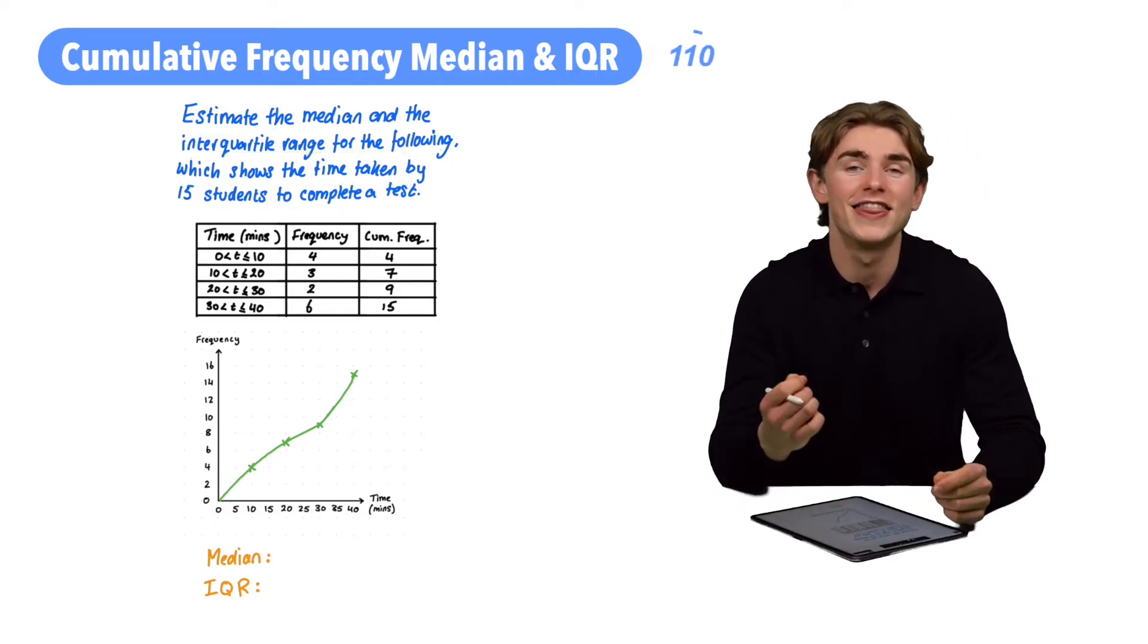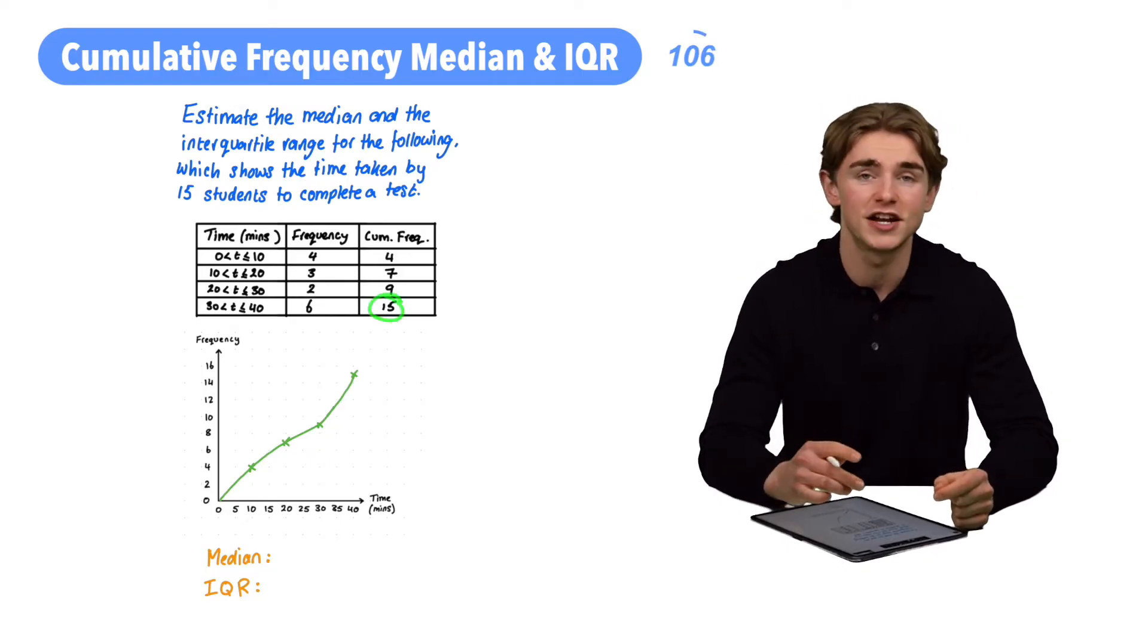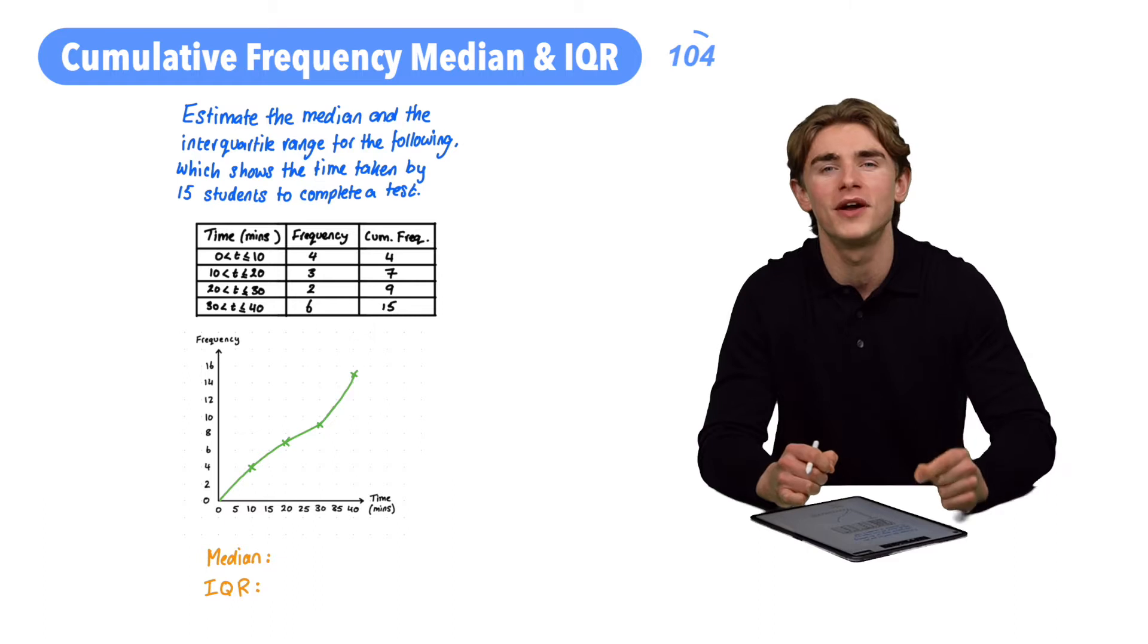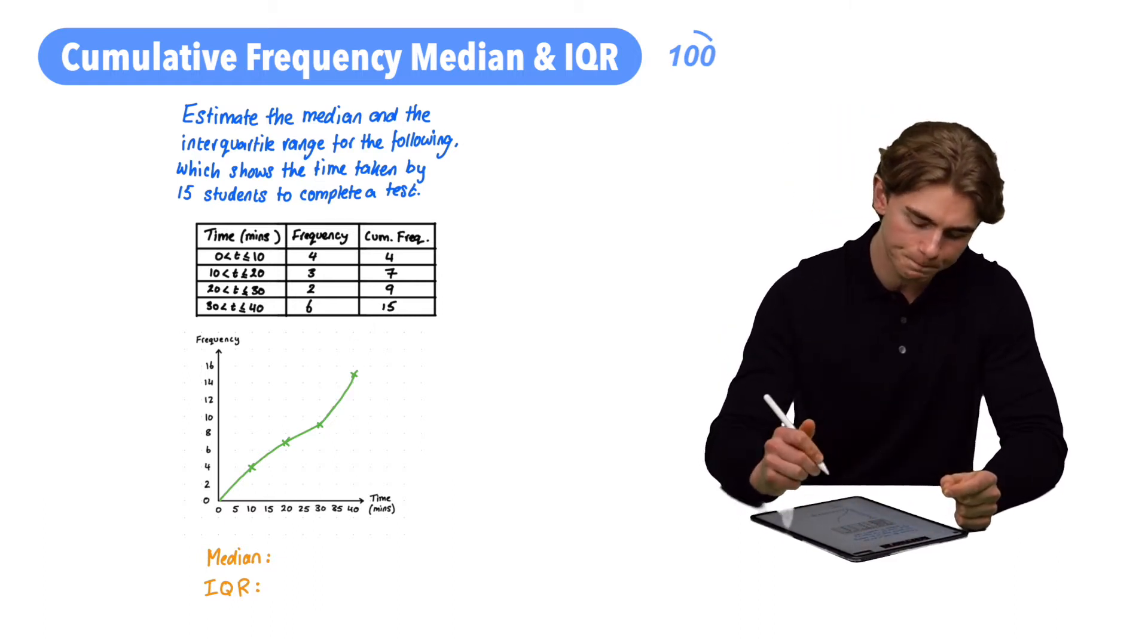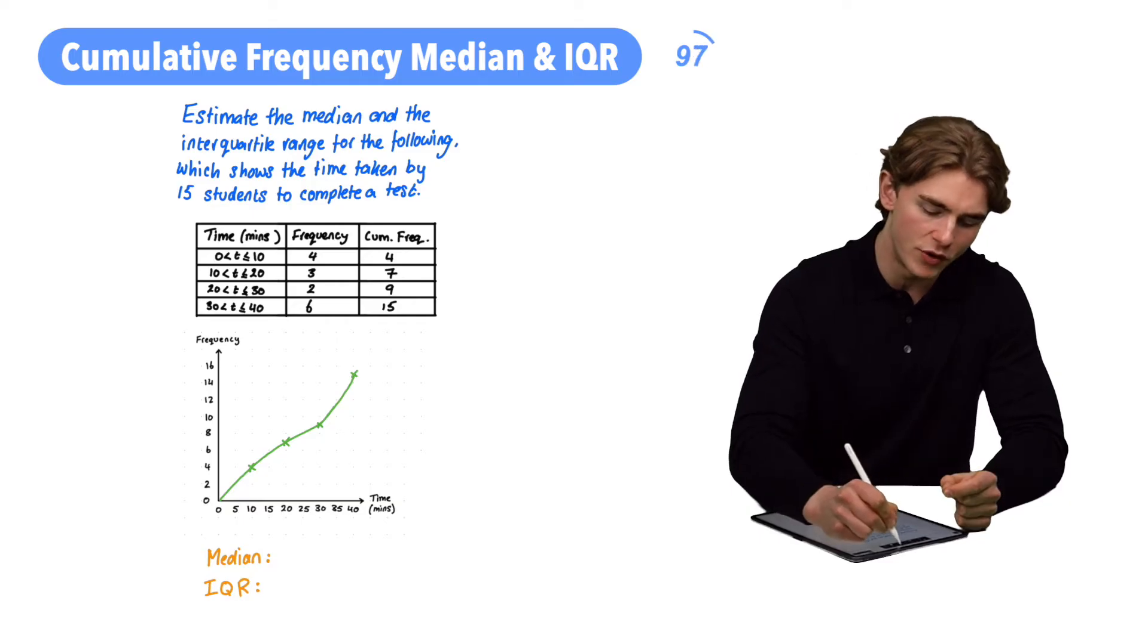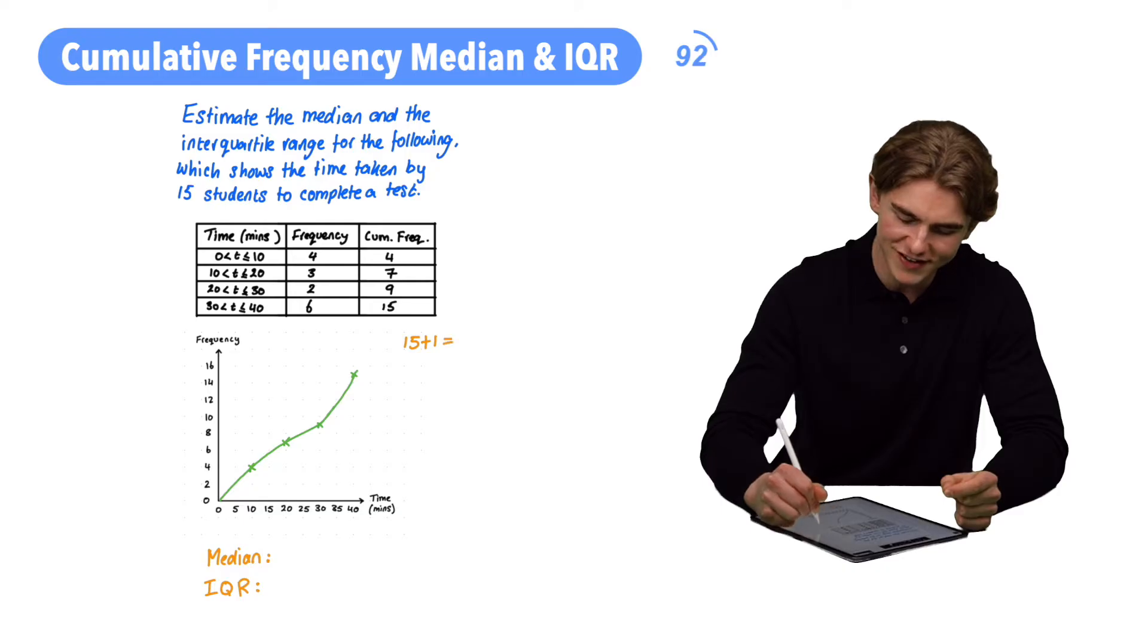What are we going to do? Step number one, that's going to be to identify which value, which of our 15 values actually represents our median. How are we going to do that? Well, what we're going to do is we're going to add one to our total frequency. Our total frequency of people, we know we have 15 students so we're going to do 15 plus 1 which is going to give us 16 and then we're going to divide that by 2. 16 divided by 2, that's going to give us 8. So we know that our 8th value is going to be our median.